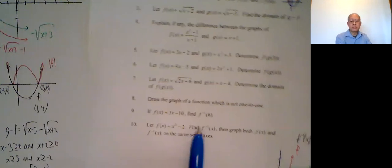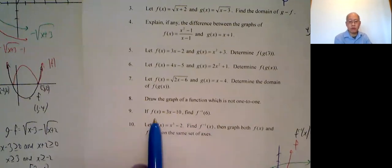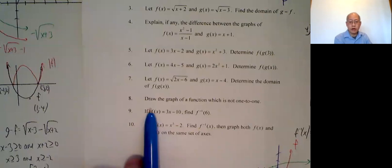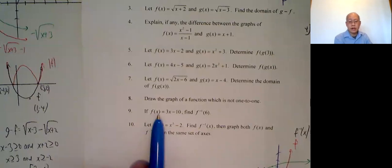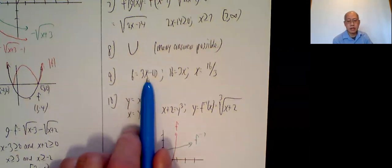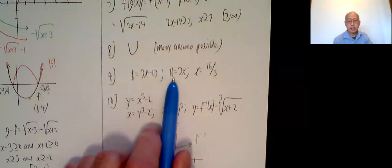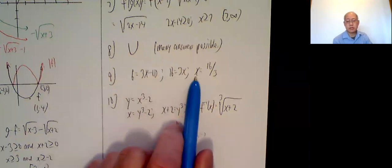Number 9, f inverse of 6 means you don't plug in 6 to x. You plug in 6 for y. Where's y? Y is all this. So y equals 3x minus 10, and put a 6 over here. So 6 equals 3x minus 10. Add 10, 16 equals 3x. Divide by 3, x equals 16 over 3.